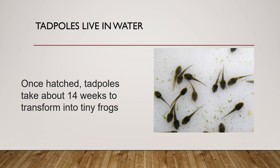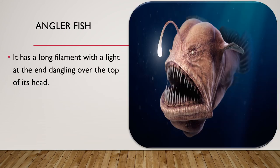This is the anglerfish. This fish has a long filament with a light at the end dangling over the top of its head. It lives under the sea level in darker sea areas. Other fish mistake the light for small prey and swim into the anglerfish's enormous mouth, where they are quickly eaten.